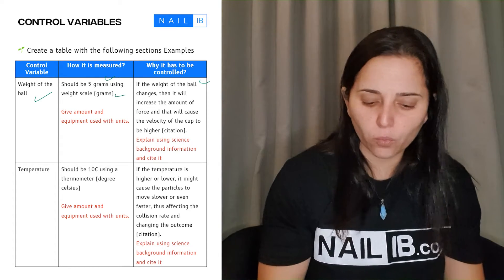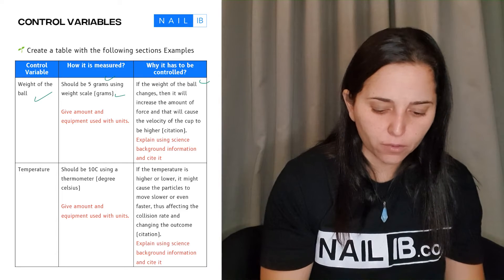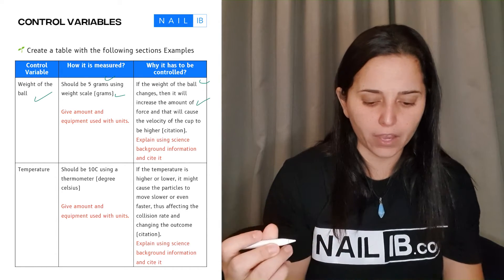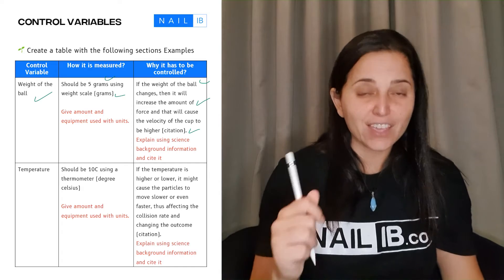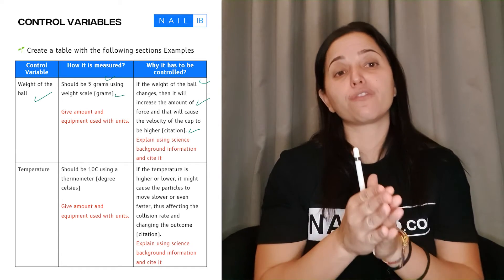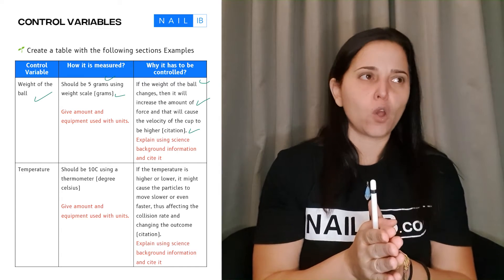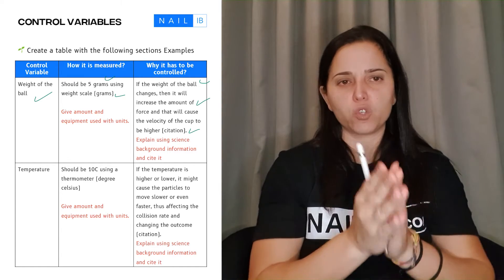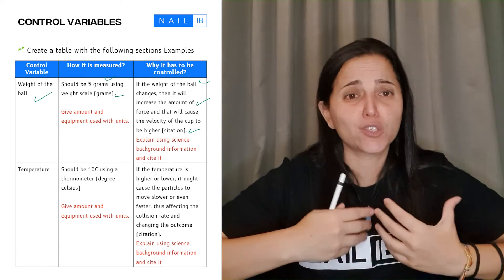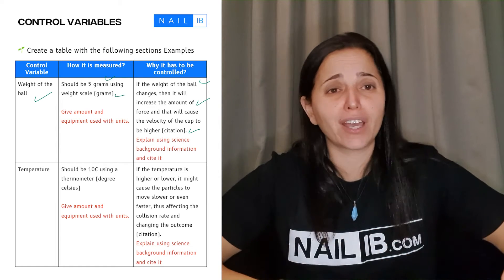The why is: if the weight ball changes, then it will increase the amount of force, and that will cause the velocity of the cup to be higher with the citation. So basically the why is the biological information. Do not - and I mean please do not say - because if we change the weight, then it will change the result of the experiment. That's too general, that's too brief. You're not going to get points for it.